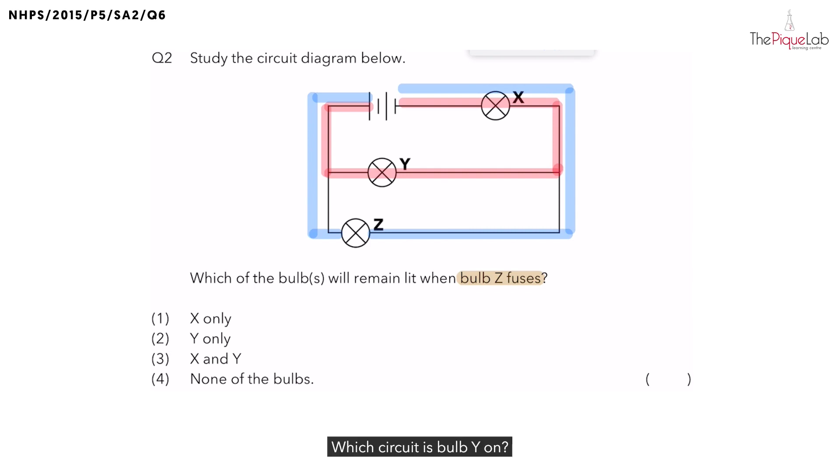Which circuit is bulb Y on? Bulb Y is on the red circuit. Is the red circuit still working? Yes. This means that electric current can still flow through bulb Y, and bulb Y can still light up.